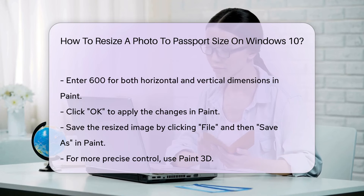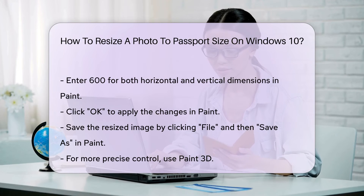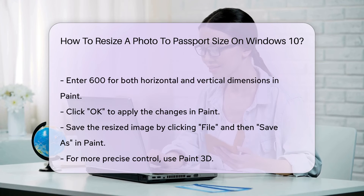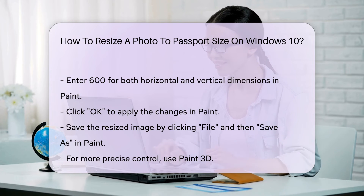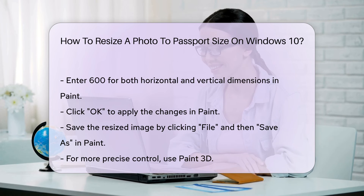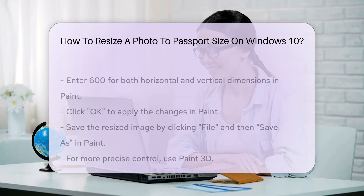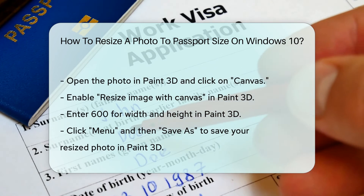Select Pixels and uncheck Maintain Aspect Ratio. Enter 600 for both horizontal and vertical dimensions. Click OK to apply the changes. Save the resized image by clicking File and then Save As.